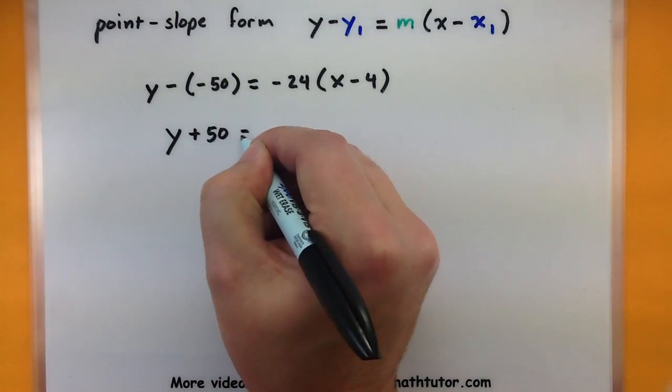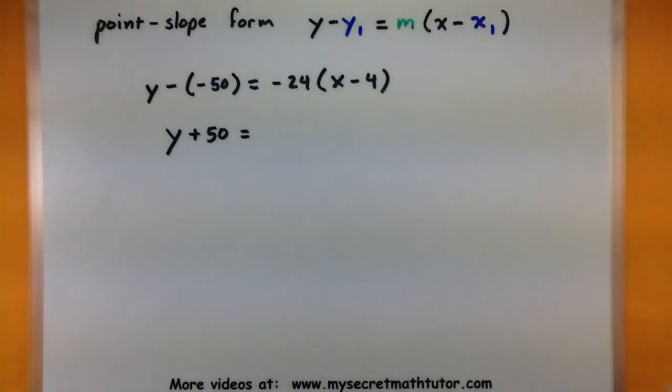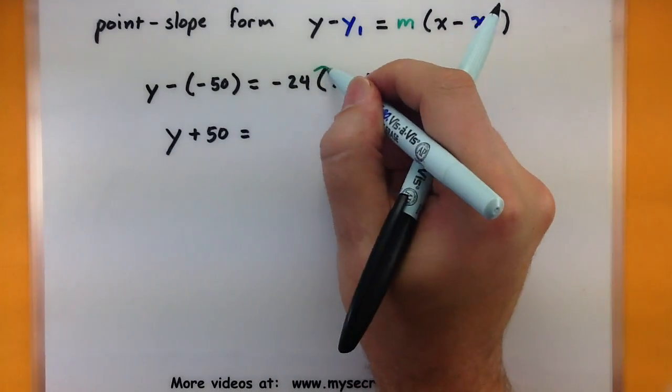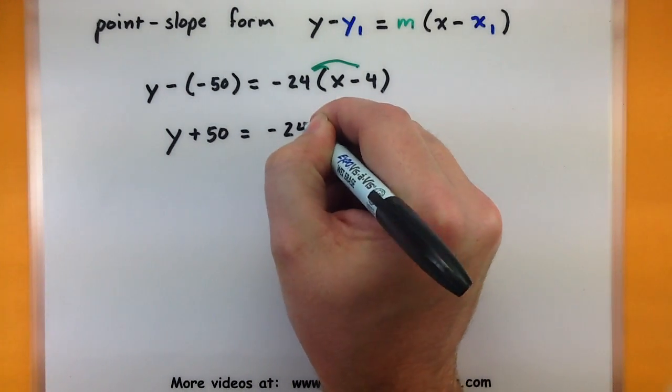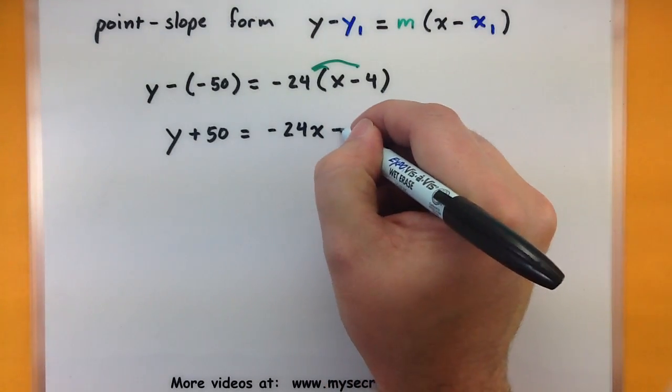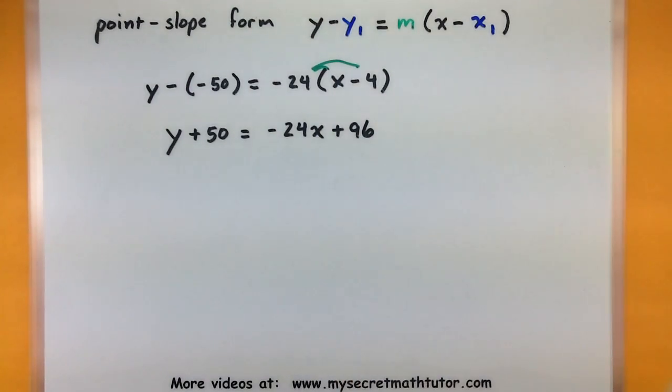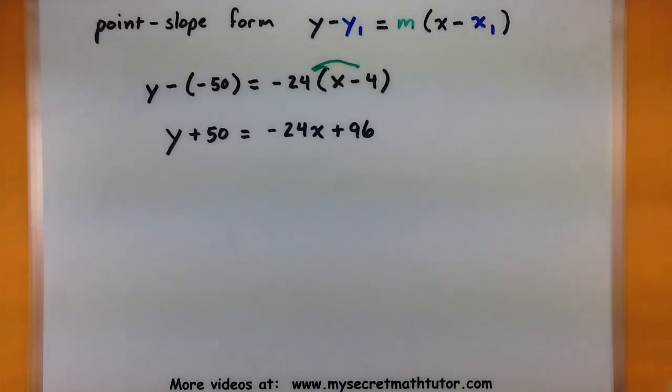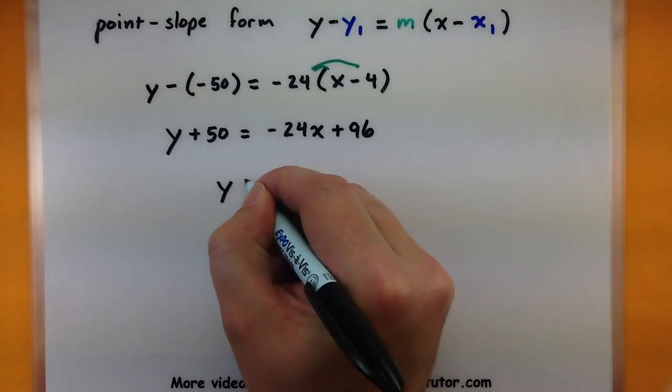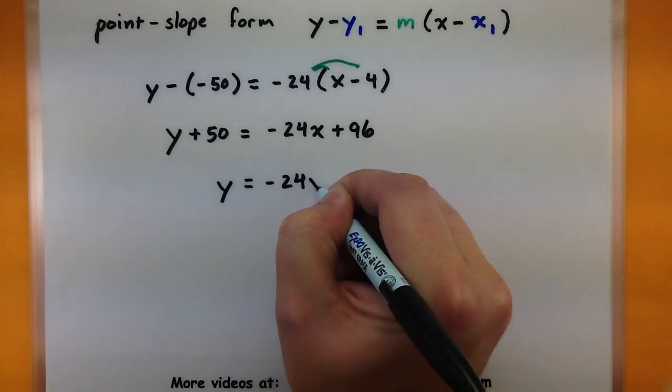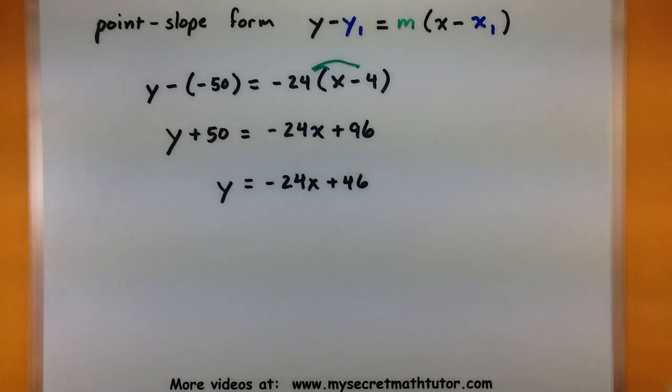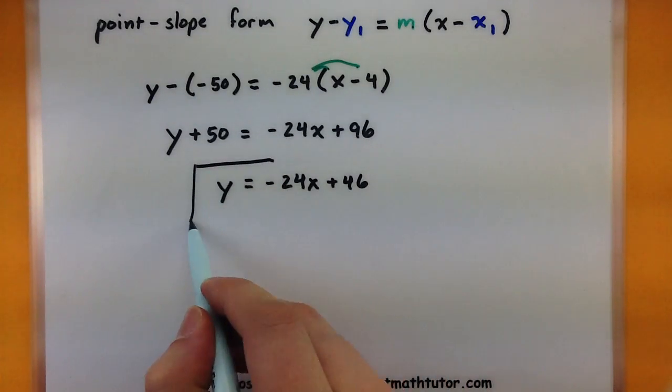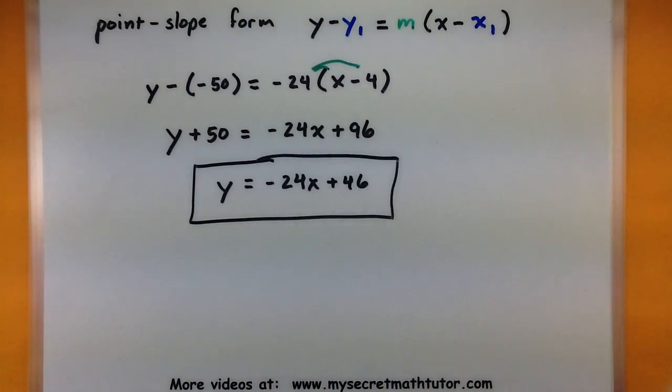So I'll take these two negative signs, get a +50, and let's go ahead and distribute that -24 in there, so we can combine just a few more things. So -24x + 96. All right, almost done. Let's subtract 50 from both sides. And we'll get y = -24x + 46. All right, and now we're completely done. So this line right here represents the equation of a tangent line at that point (4, -50).